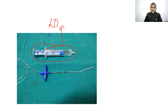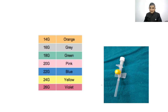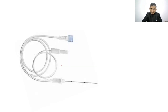IV cannula color coding: 14G orange, 16G grey, 18G green, 20G pink, 22G blue, 24G yellow, and 26G violet.